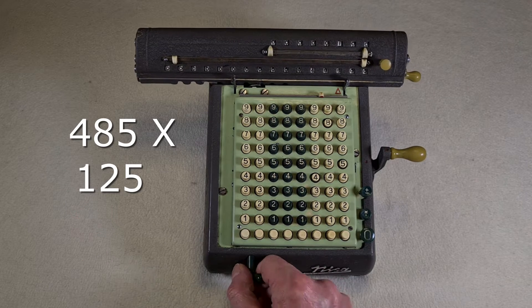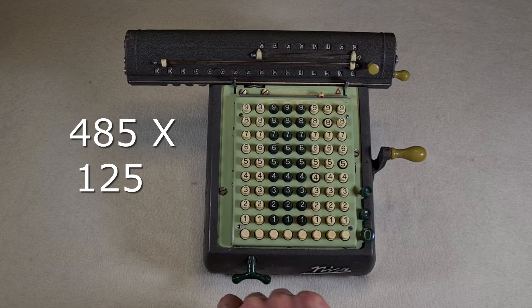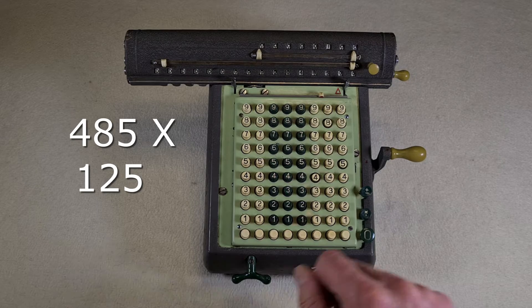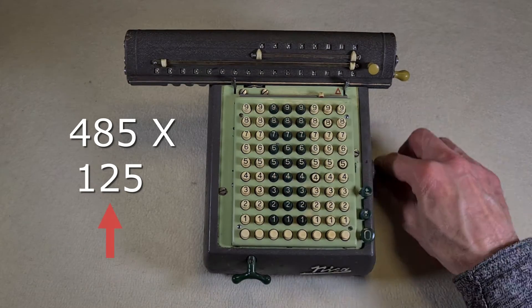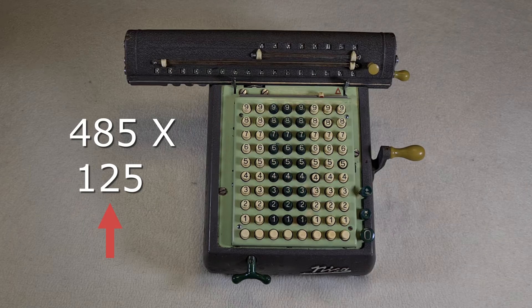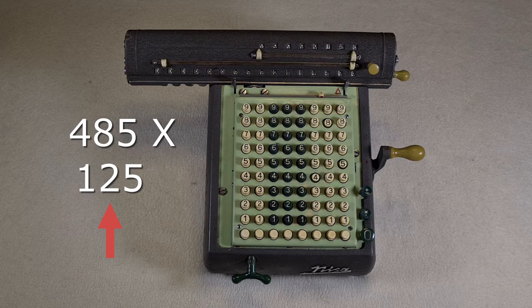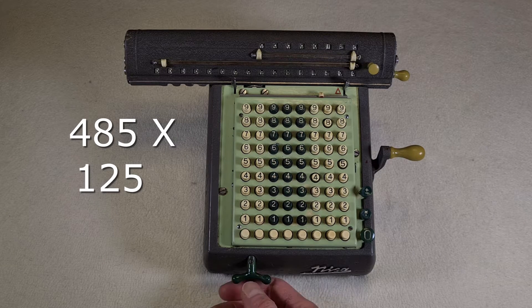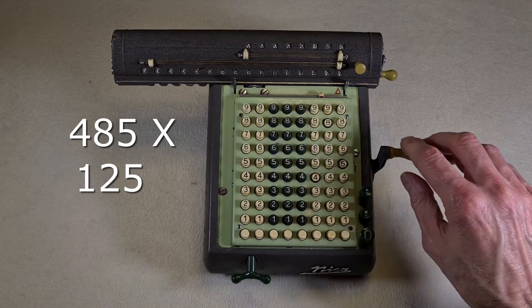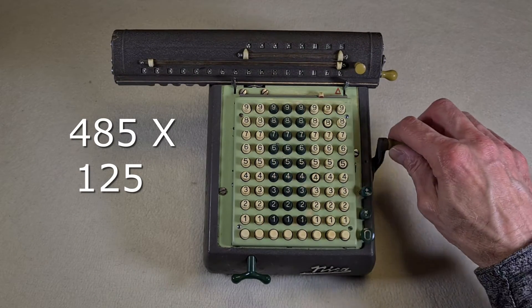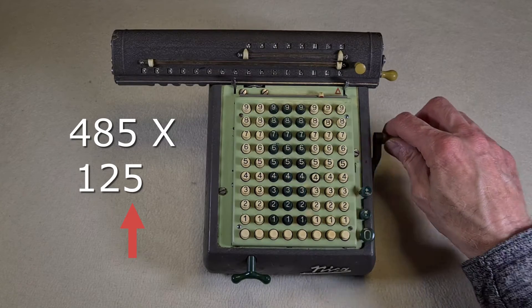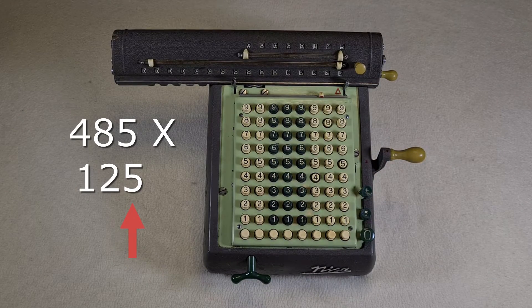Then you turn the handle again to move the carriage to the tens position, and you turn the crank 2 times, for the 2 in the number 125, and you turn the handle again to move the carriage to the units position, and you turn the crank 5 times, for the 5 in the number 125.